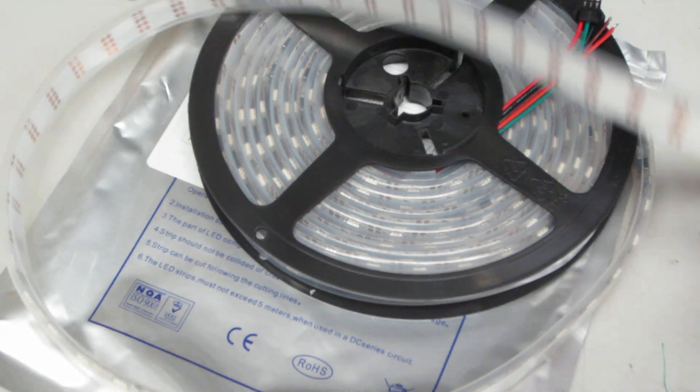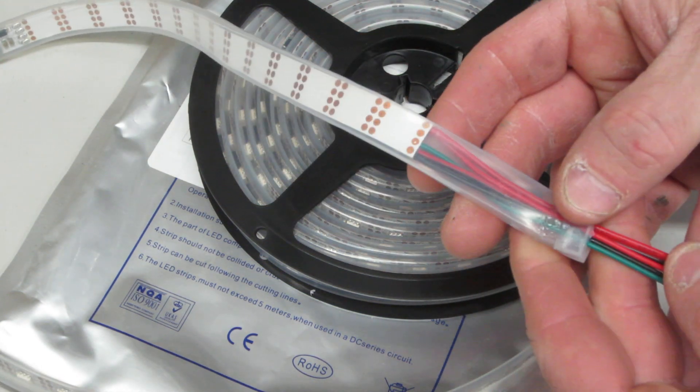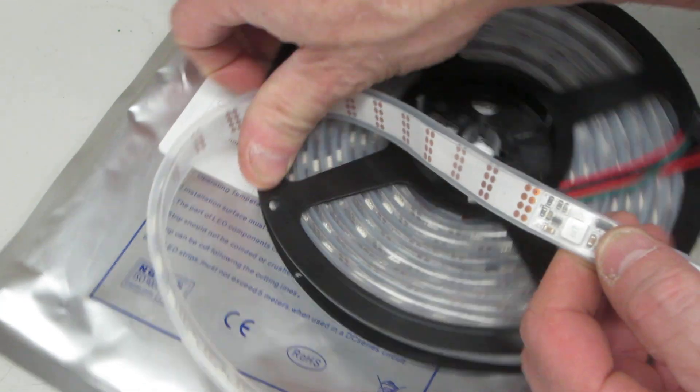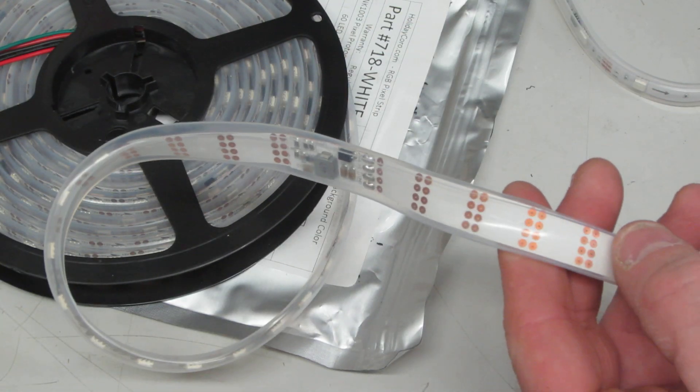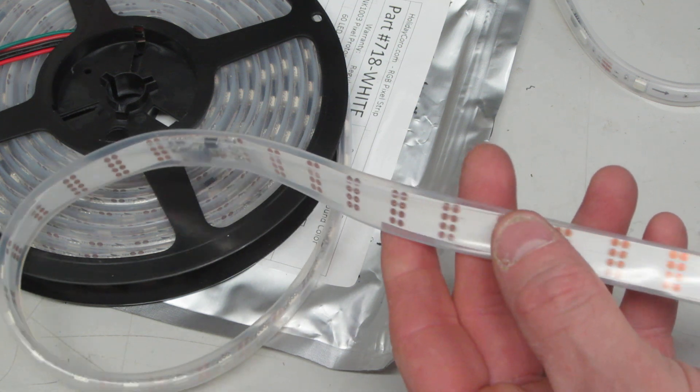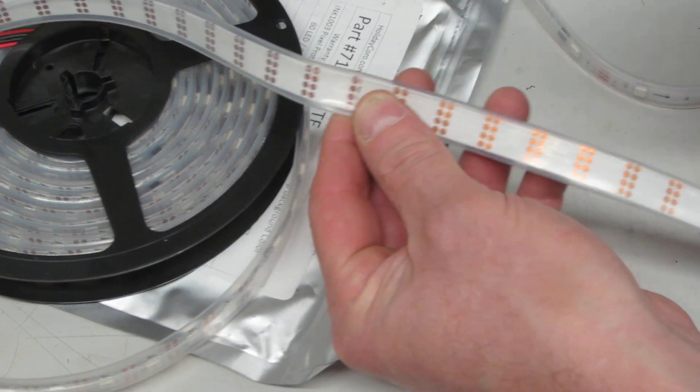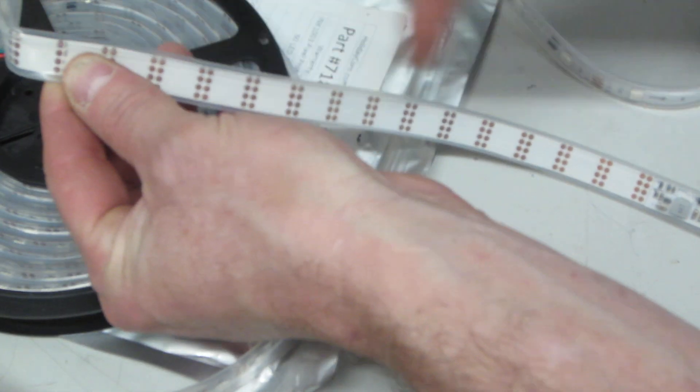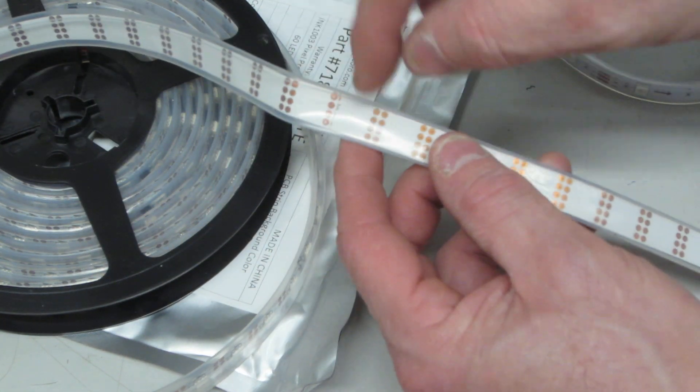First thing you need to understand is that these are built in sections. If we look down the strip, here's the beginning of the strip. You see there's a buck converter. If we keep going down the strip, we'll see that there's another buck converter. If we back up a little bit, about halfway, we're now halfway to the buck converter here from here to here.